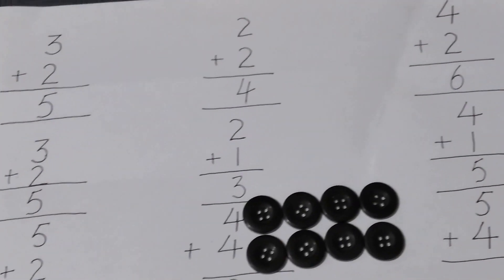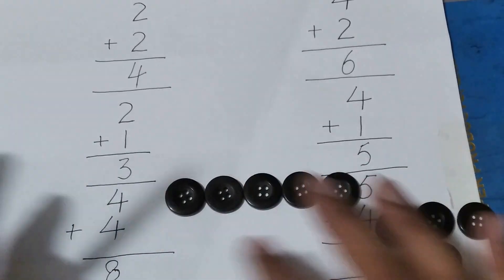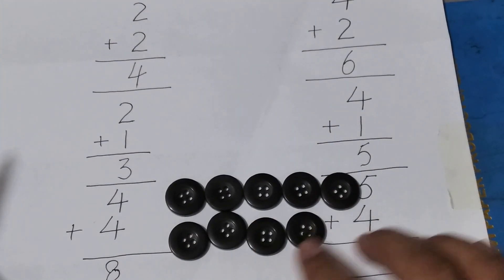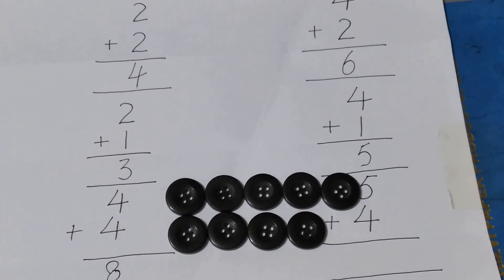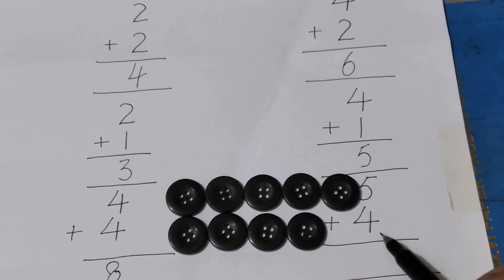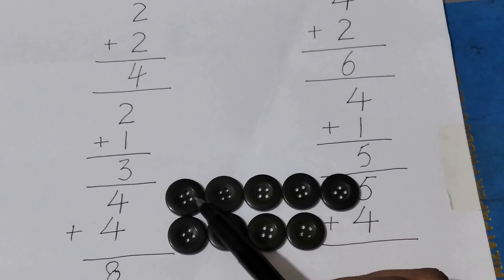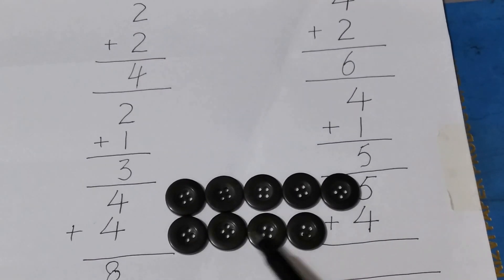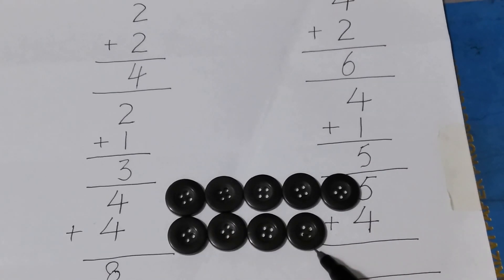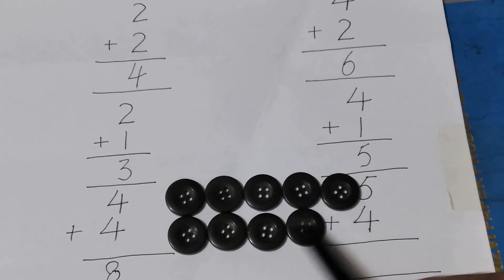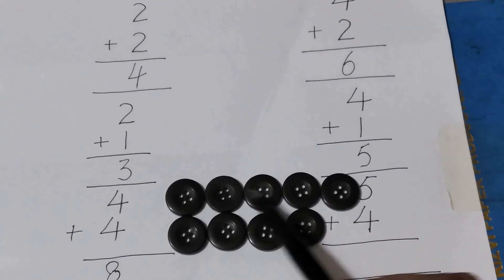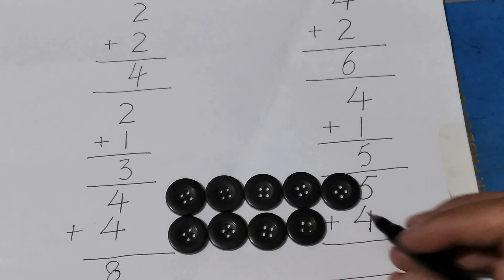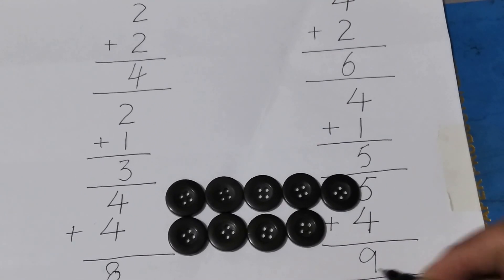Now five buttons and four — here is five plus four. I am taking five buttons: one, two, three, four, five. And here is four — I will take four buttons: one, two, three, four. Now I will count how many total buttons there are: one, two, three, four, five, six, seven, eight, nine. So my answer is nine.